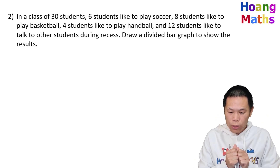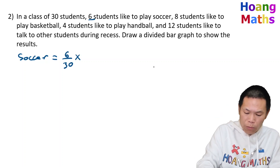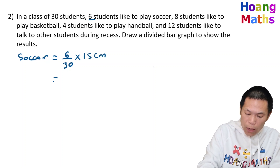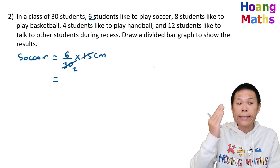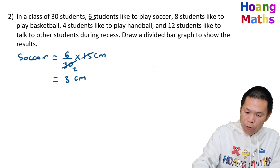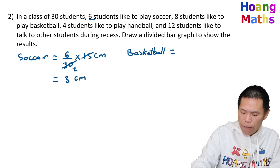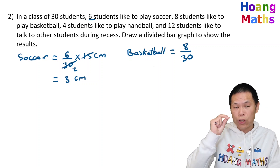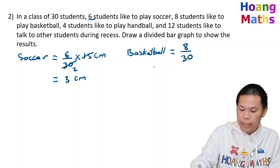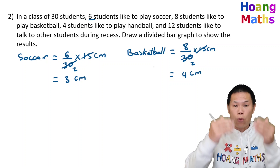For soccer: 6 students, so 6 over 30 times 15 centimeters. Divide 15 by 30 to get 2, then 6 divided by 2 is 3 — so soccer is 3 centimeters. Or just put 6 divided by 30 times 15 on a calculator. For basketball: 8 students, so 8 over 30 times 15. Eight divided by 2 is 4 — so basketball is 4 centimeters.